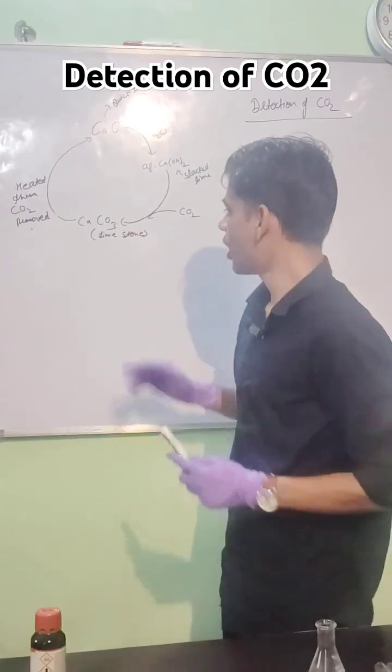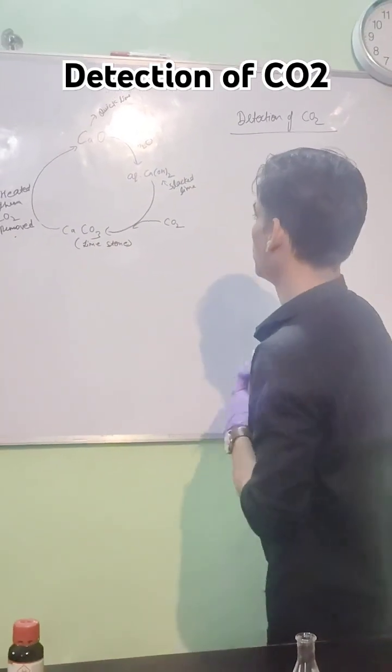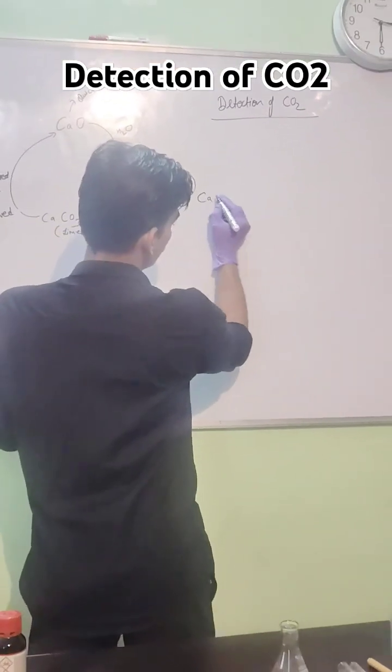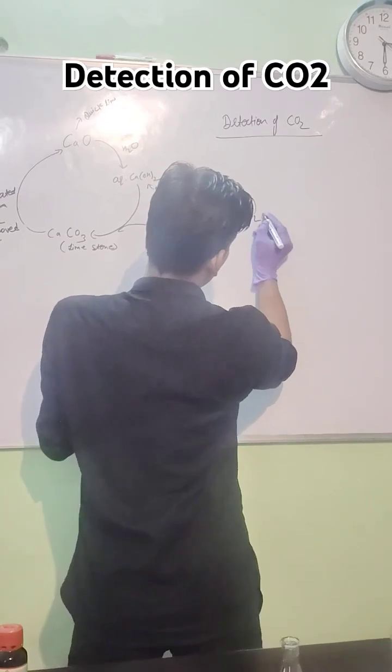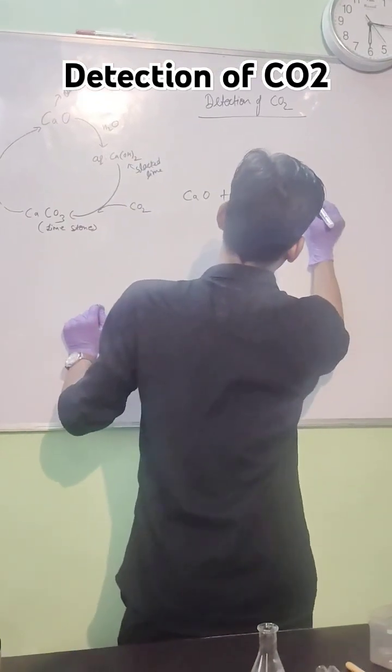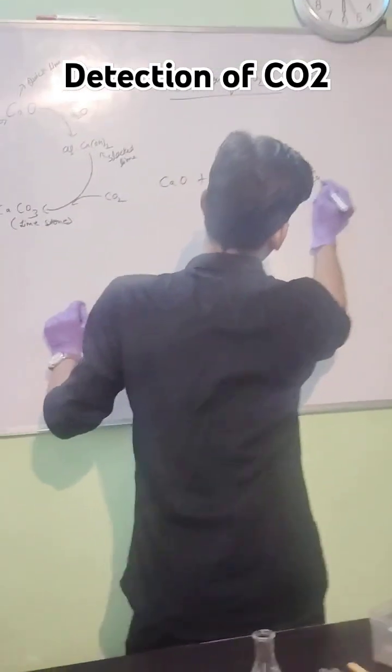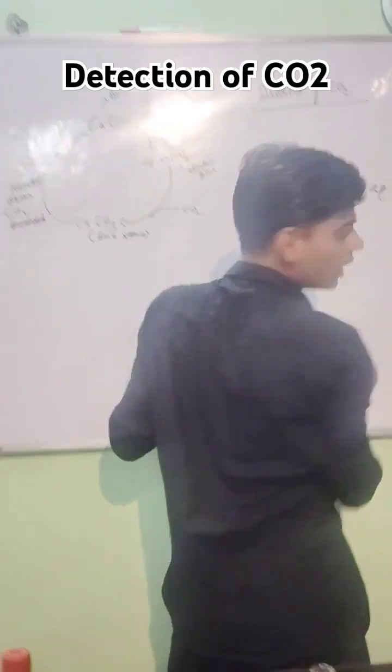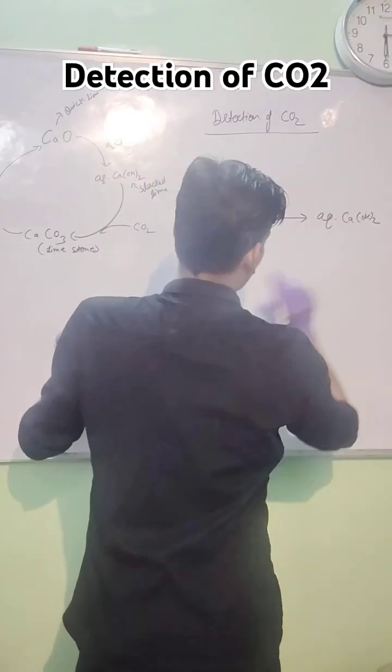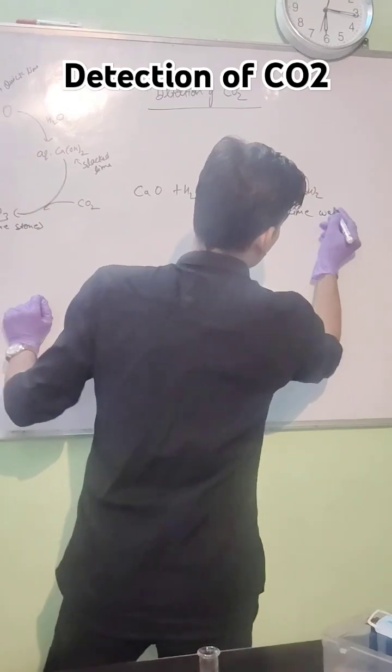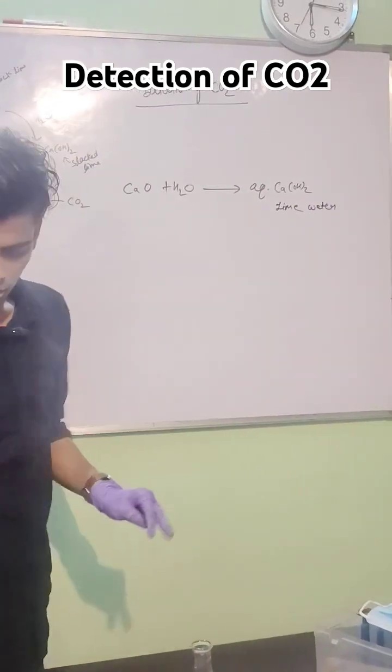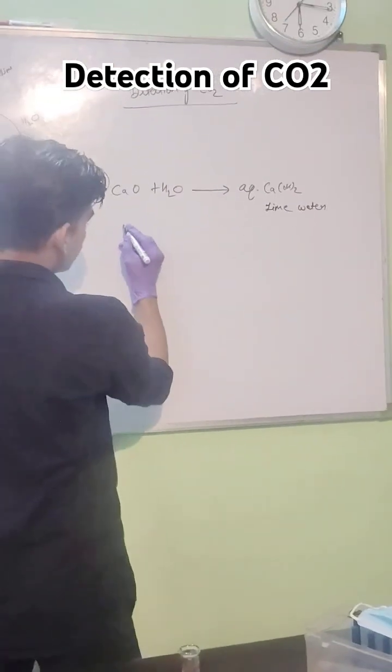First of all, I am going to show the reaction. This is calcium oxide. If we mix it with water, then what will happen? It forms aqueous calcium hydroxide. This is known as slaked lime or you can say lime water.